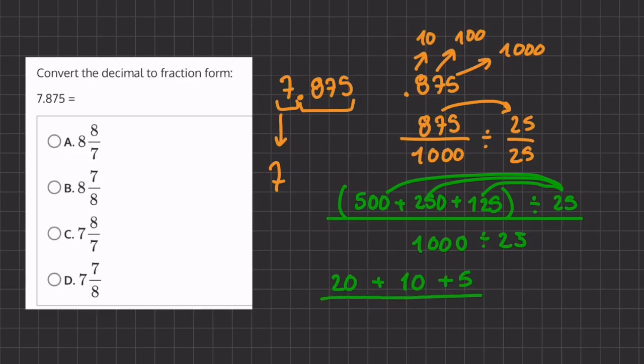So this will be our numerator and our denominator will be 1000 divided by 25 and that will give us 40. All right, so now let's simplify our fraction even more. We have 20 plus 10 plus 5, which is 35 all over 40.